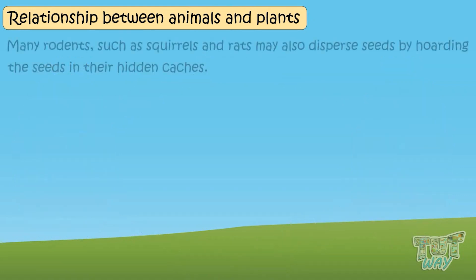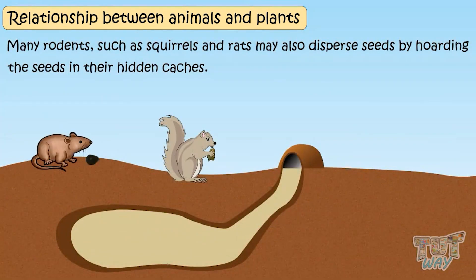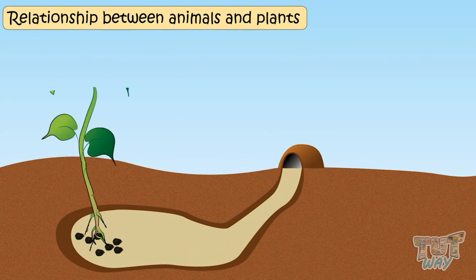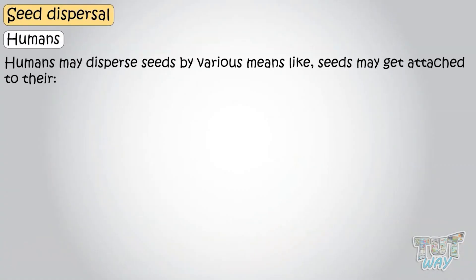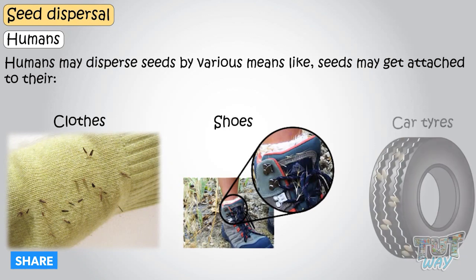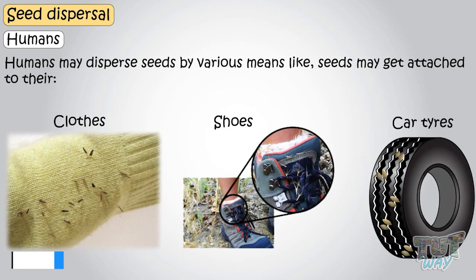Many rodents, such as squirrels and rats, may also disperse seeds by hoarding them in hidden holes, which remain well protected from other seed predators, and some are left uneaten and grow into new plants. Humans may also disperse seeds by various means — seeds may get attached to human clothes, shoes, and vehicles, and get transported to distant locations.